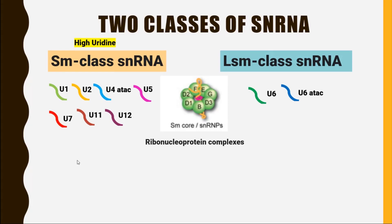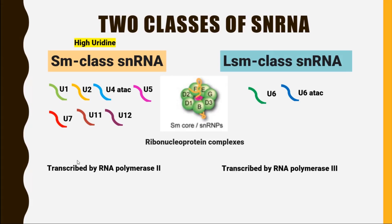Sm class snRNA is transcribed by RNA polymerase 2, while LSM class snRNA is transcribed by RNA polymerase 3. During their biosynthesis, Sm class snRNA does leave the nucleus and then comes back to perform its function, whereas LSM class snRNA never leaves the nucleus.